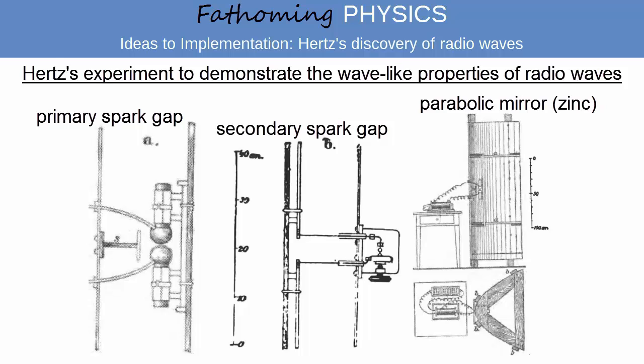His primary conductor for this experiment is shown on the left, in top-down view. This was placed at the focus of a parabolic mirror, shown on the right, constructed from zinc sheets and supported on a wooden framework. The secondary conductor he used for these experiments is shown in the centre.